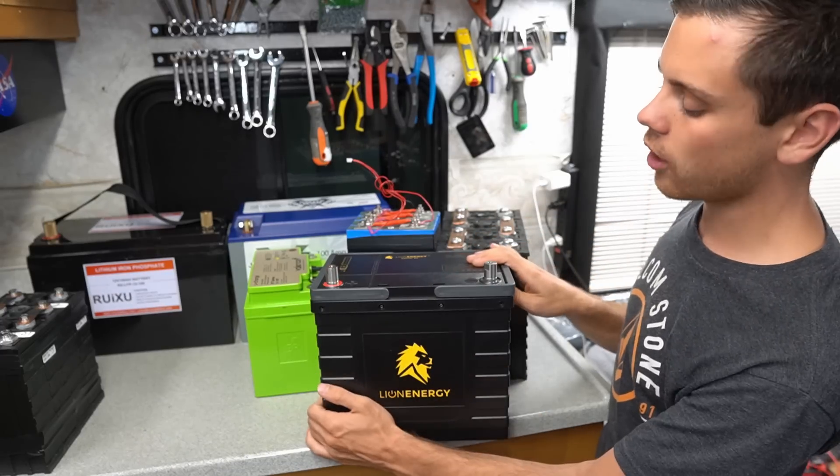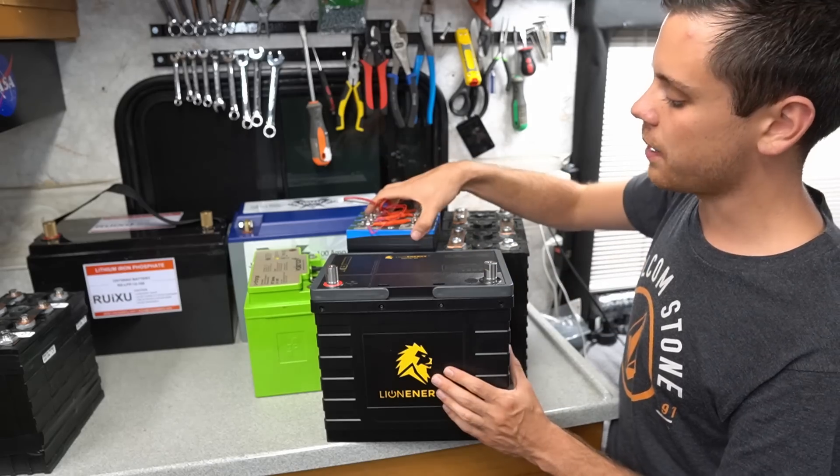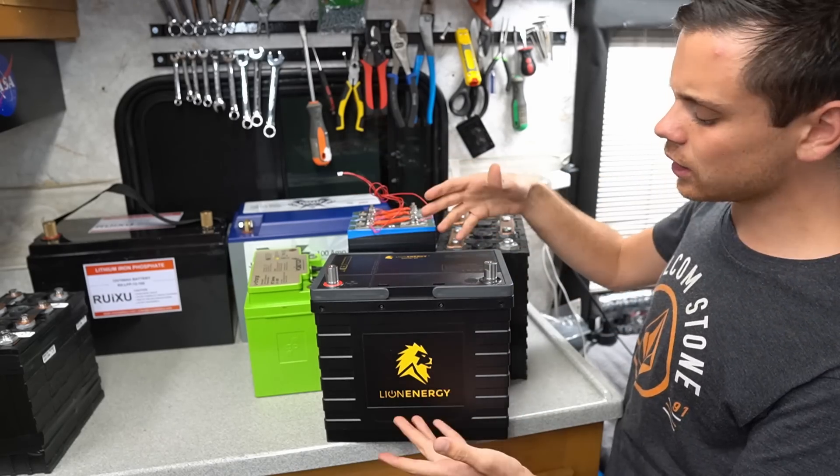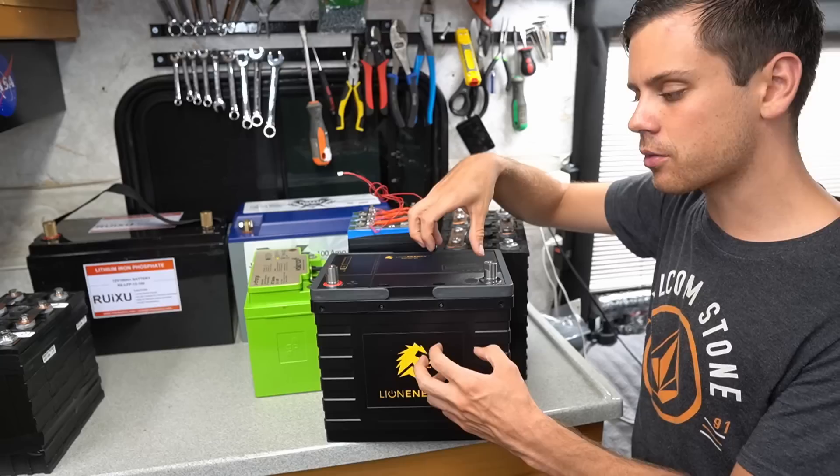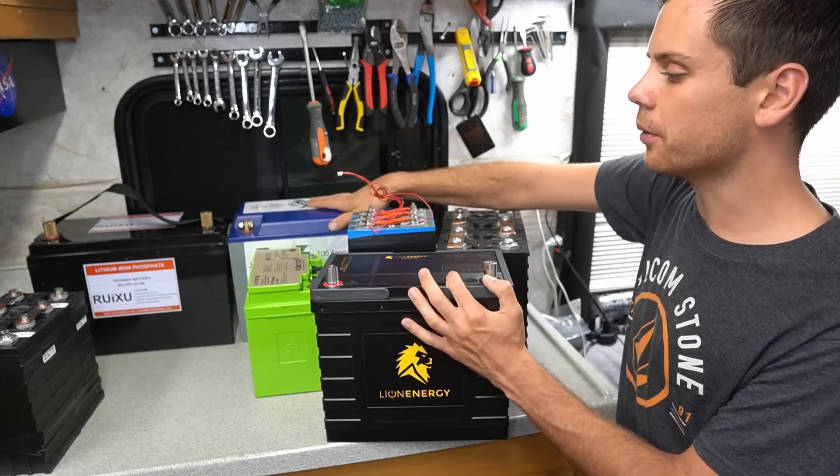So I still like this Lion Safari and it's very lightweight considering it has 90 amp hour prismatic aluminum case cells. And it's still a good option but because of the reduced capacity it's pretty much the same price as the Battleborn.